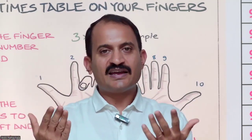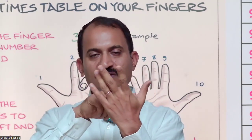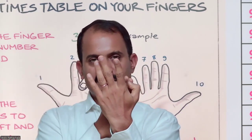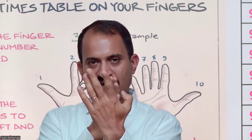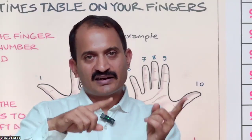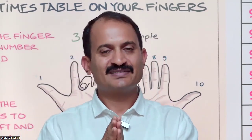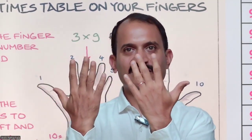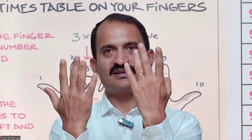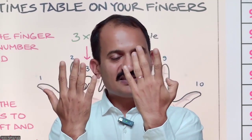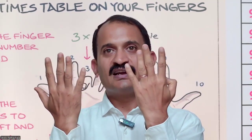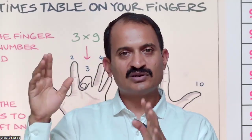When I say 9 ones are, I have to fold the first finger. When I fold the first finger, whatever fingers are there to the left of that folded finger is your tens place. And how many fingers are there to the right of that folded finger is your units place. For 9 ones: fold the first finger — tens place is 0 (nothing to the left), and there are 9 fingers to the right. So 09, meaning 9.